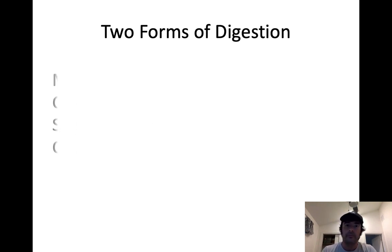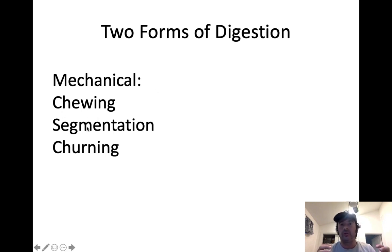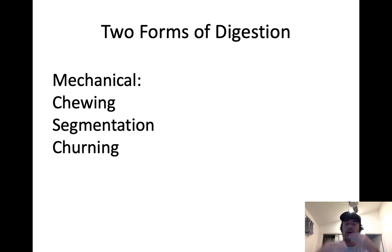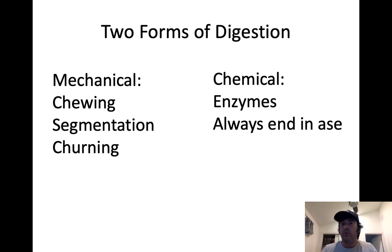There are two forms of digestion to pay attention to. We have mechanical digestion, which doesn't work at the molecular level — it works at the macroscopic level, the level you can see. Chewing, also known as mastication, is a form of mechanical digestion. Segmentation — a series of contractions that take place in the stomach — is kind of like a cement mixer, mashing and mixing stuff up to prepare it for chemical digestion. Chemical digestion is always facilitated by a group of proteins called enzymes. Enzymes catalyze chemical reactions, lower the activation energy, and speed those reactions up without being used in the reaction.